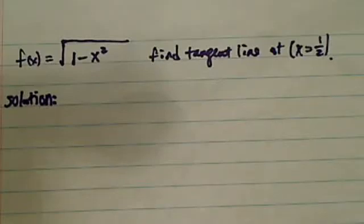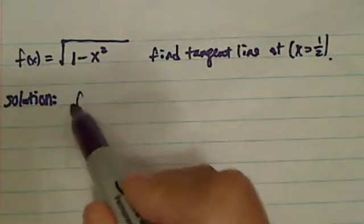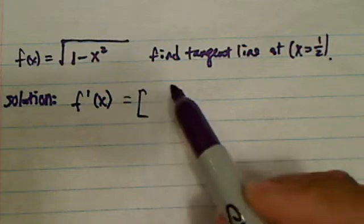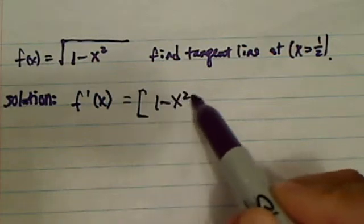To find a tangent line or slope for this function, we need to take the first derivative, f'(x). So first, let's write this equation into exponential form.